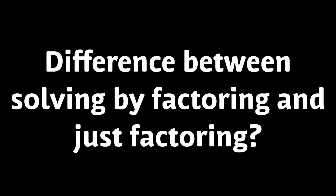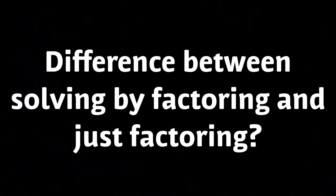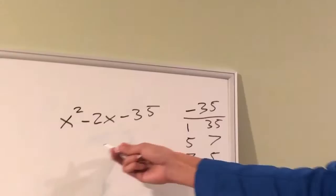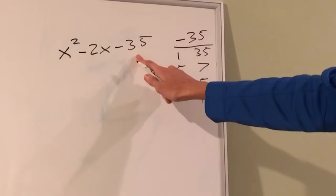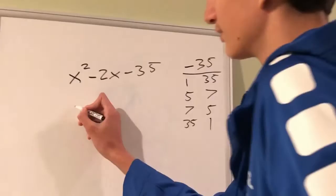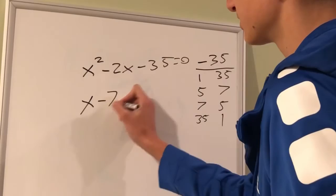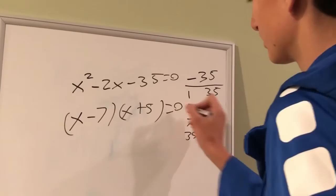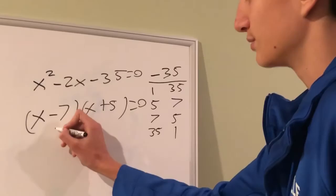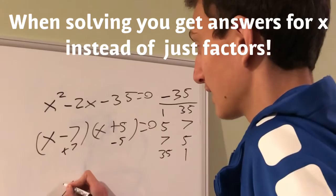The difference between solving by factoring and just factoring is that when you solve, you have to set your answer equal to zero. If you get a factored product equal to zero, you can solve each factor to find the variable's value. You do this by taking the opposite of the numbers added or subtracted to the variable. For example, x squared minus 2x minus 35: find factors of 35 that add up to negative 2, which would be negative 7 and positive 5. So you get (x minus 7)(x plus 5) = 0. Since it equals 0, you solve each factor: x equals 7 and x equals negative 5.